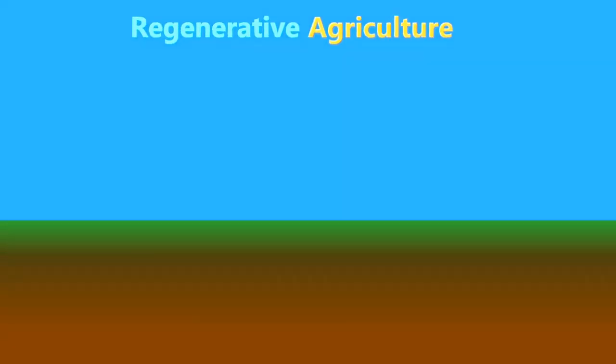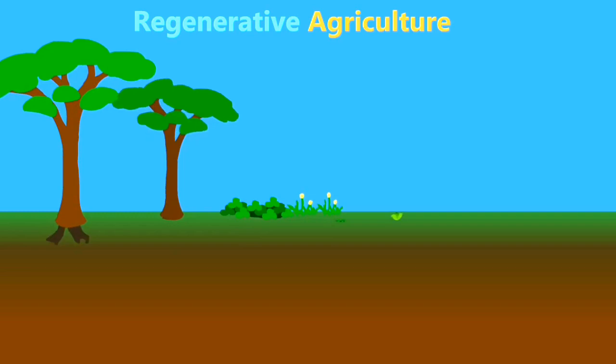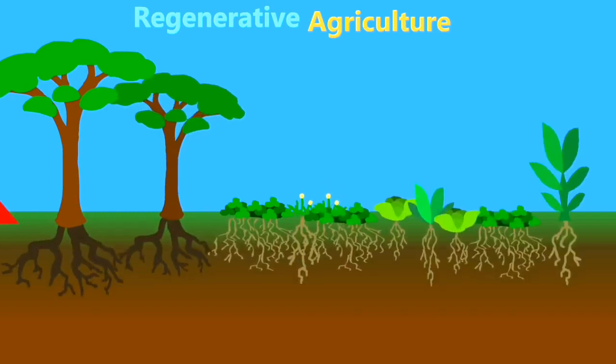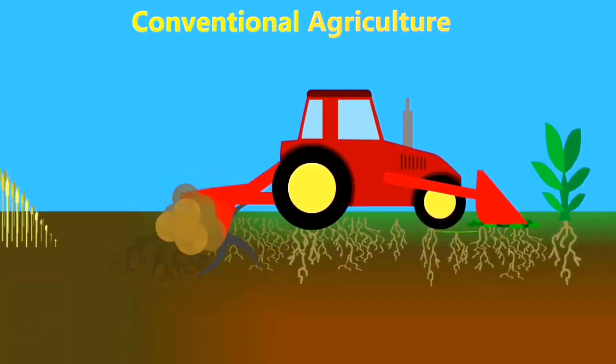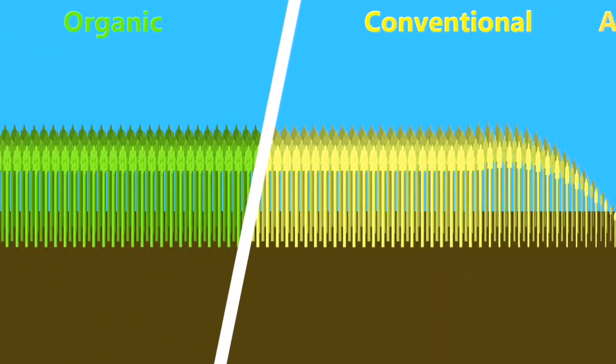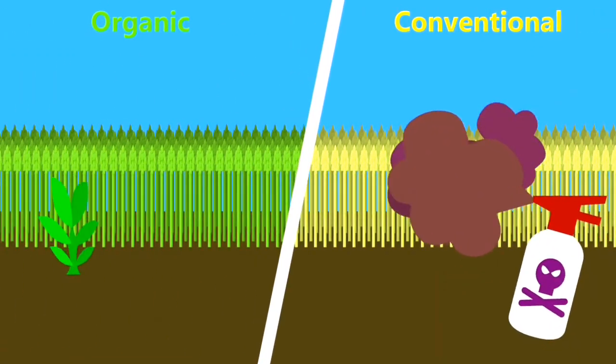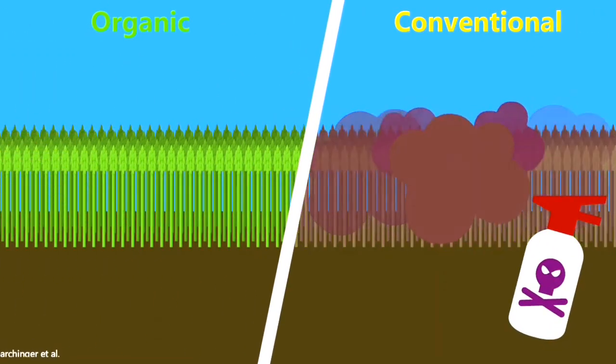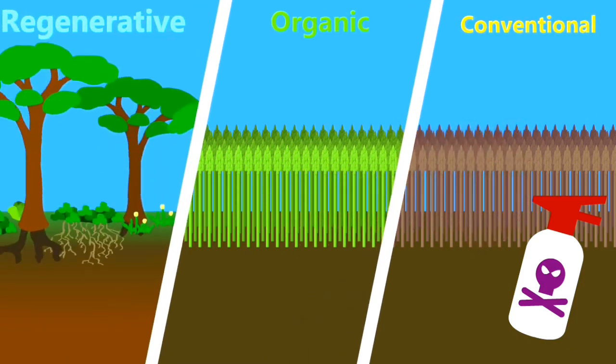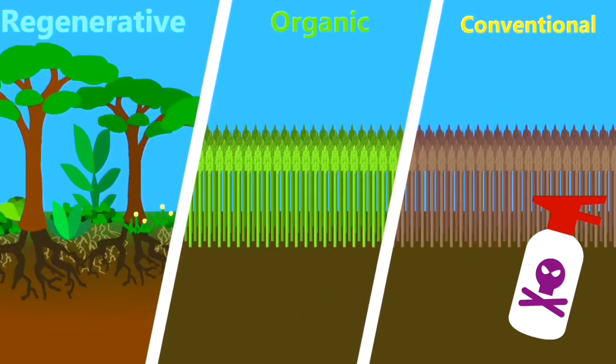Regenerative agriculture is a set of farming practices that increase biodiversity and soil organic matter. Currently, most agricultural practices are devastating to biodiversity. Even organic agriculture, while not as bad, still does more harm than good. Regenerative agriculture is a way to reverse this trend to actually make a positive impact on the land.